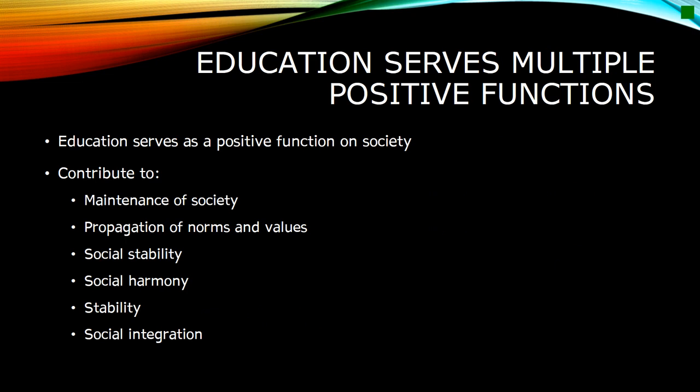From a functionalist perspective, education performs a positive function for all individuals in society and has a powerful influence over it. The education system serves the needs of an industrial society, providing a more advanced division of labor and socializing new generations into societies by propagating shared norms and values. There is a relationship between all these agents of socialization and together they all contribute to the maintenance of society as a whole. The propagation of norms and values results in social stability and cohesion, which contributes to the achievement of social equilibrium.